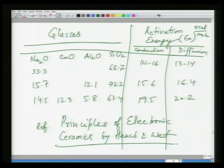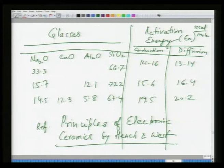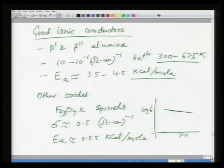The activation energy values obtained from diffusivity measurements are very similar to those obtained from conduction measurements, which validates the model. We then looked at good ionic conductors — one example is beta aluminas, and many other oxides, all with different activation energies. Good ionic conductors typically have low activation energies.